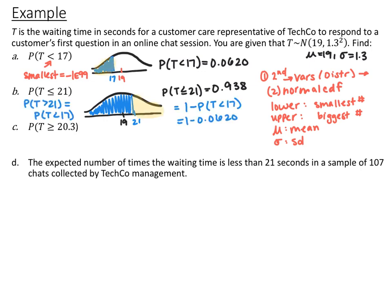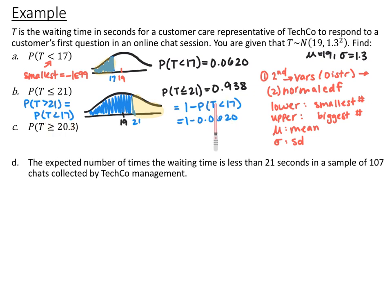One useful feature of normal curves is symmetry. Because 17 and 21 are the same distance from the mean of 19, the probability of being greater than 21 has the same area as the probability of being less than 17. So the probability of being less than 21 equals 1 minus the probability of being greater than 21, which equals 1 minus the probability of being less than 17. You could use your answer from part A to help with part B.